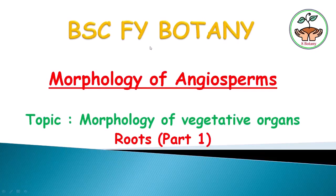Welcome to Yes Partner. We are going to see the morphology of the angiosperm. Today's topic of discussion is the morphology of the vegetative organs. First of all, we should know what vegetative organs are. Vegetative organs are the organs of the plants that do not take part in sexual reproduction directly. The examples of vegetative organs are the root, stem, and leaves.